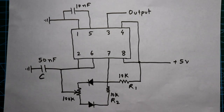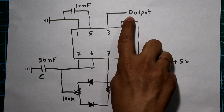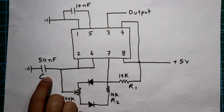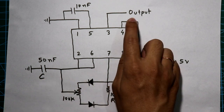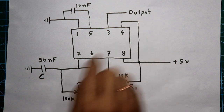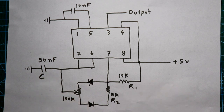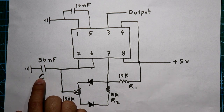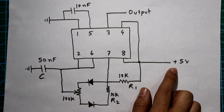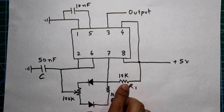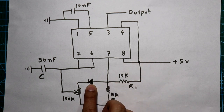As we know from the previous video, the output of the 555 is high whenever the capacitor is in a charging condition, and the output of the 555 is off whenever the capacitor is in a discharging condition. We have to calculate only the on-time. The capacitor charges by this voltage — current flows through R1 and through this diode.